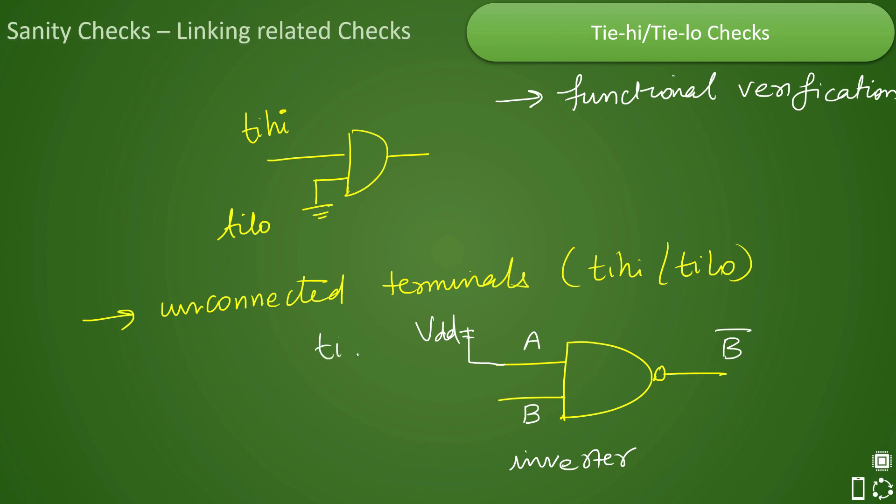This tie-high case should be connected to VDD, and sometimes because of improper implementation, this tie-high connection is not present and that leads to functionality issues or other issues, and that should be avoided. For that, there is a tie-high tie-low check.